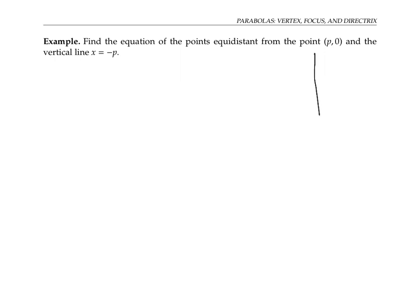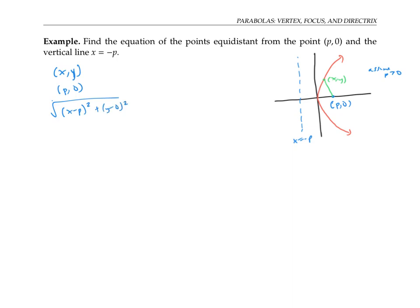Next, let's turn things sideways by looking at the equation for all points equidistant from a point (p, 0) on the x-axis — assuming p is bigger than zero — and a vertical line at x equals negative p. Our intuition suggests this should be a parabola pointing sideways. Starting with an arbitrary point (x, y), the distance from the point (p, 0) is given by the square root of (x minus p) squared plus y squared. The distance from the line x equals negative p is given by the difference in x-coordinates, so that's x minus negative p, or x plus p. I'll set these two distances equal to each other, square both sides, and simplify.